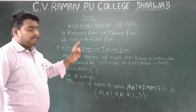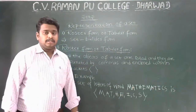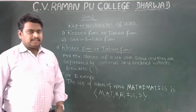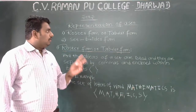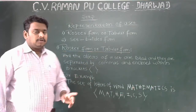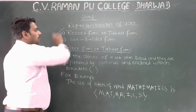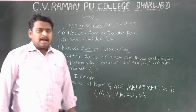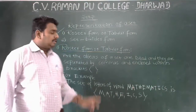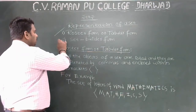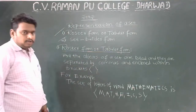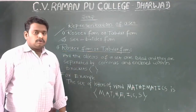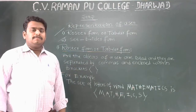Now we go to the representation of a set. There are two types of representation: the first one is the roster form, also called tabular form, and the second one is the set builder form.